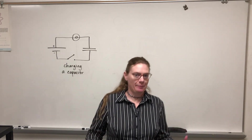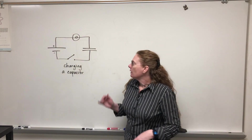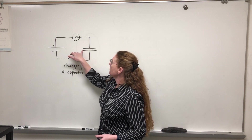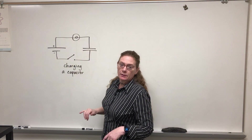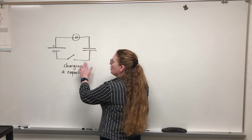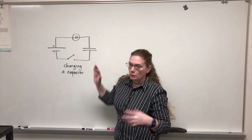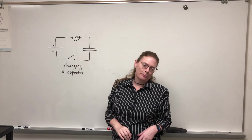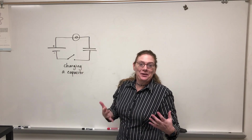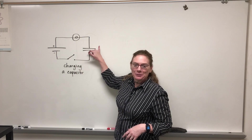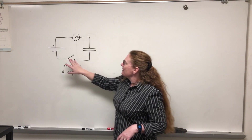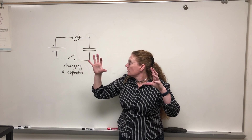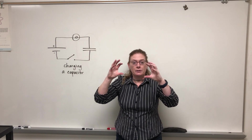Now that we have the basic idea of what a capacitor does and how it works, let's think about the current and voltage in a basic capacitor-bulb-resistor circuit. We are going to be charging the capacitor, so it starts out with no excess charge — it is neutral. There are charges, but there's an equal amount of positives and negatives on the plates right now. When I close the switch, the bulb starts out bright and then dims out.